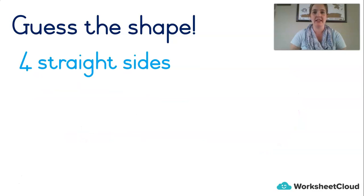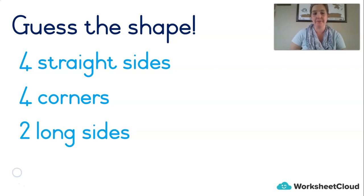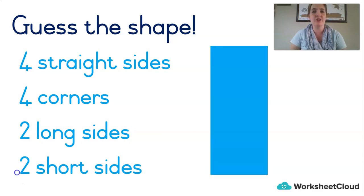Okay, next one. It has four straight sides, four corners. What 2D shape has four straight sides, four corners? But wait, there's more — two long sides and two short sides. It's a rectangle! Well done!